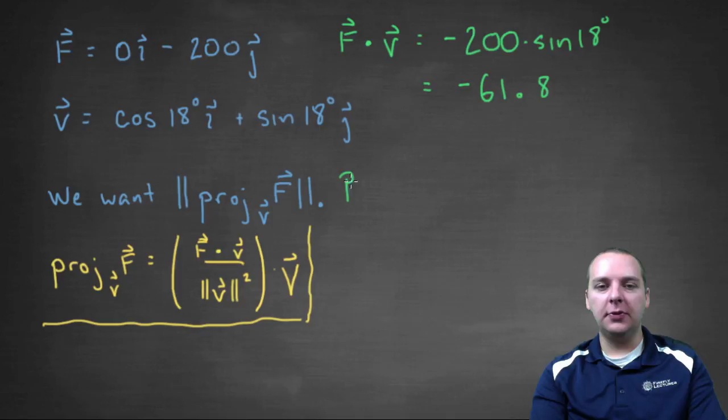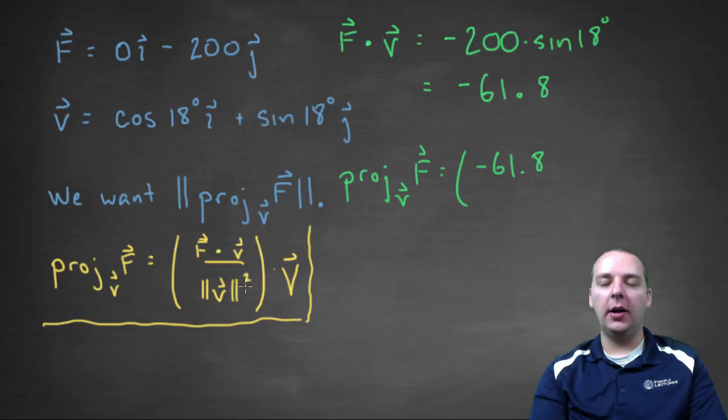So for our projection formula, the projection of F onto V, we would have a scalar of negative 61.8 divided by the magnitude of V squared.